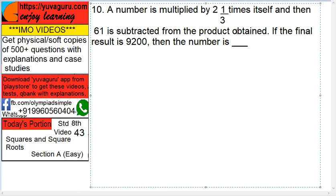Next, a number is multiplied by 2⅓ times itself, and then 61 is subtracted from the product obtained.